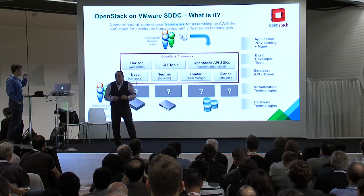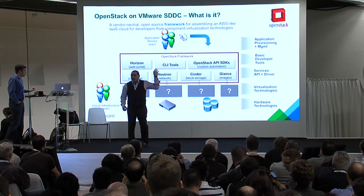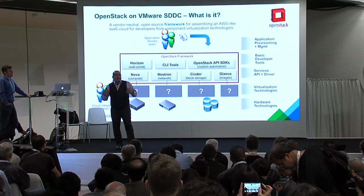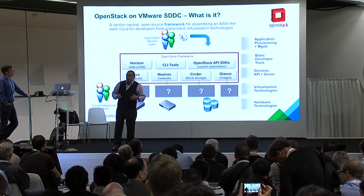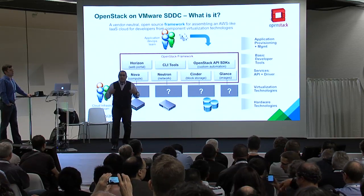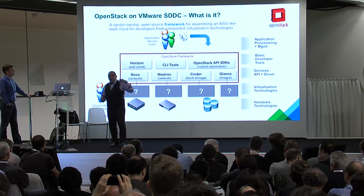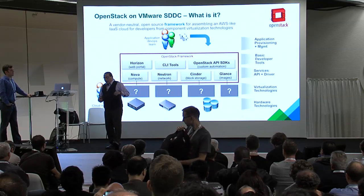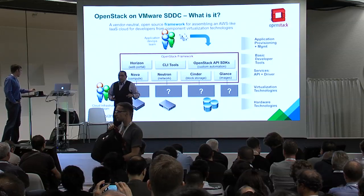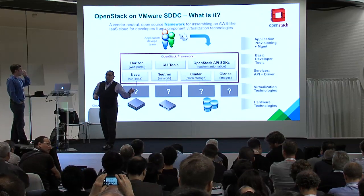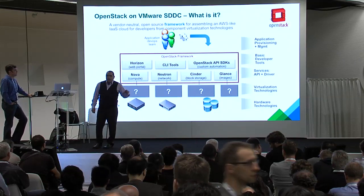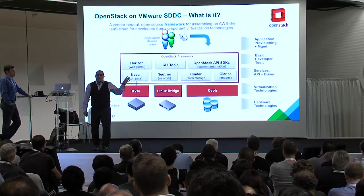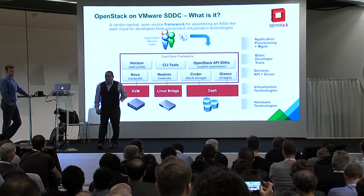The key thing about OpenStack and VMware SDDC — the Software Defined Data Center — is for us to provide a framework to assemble an AWS-type infrastructure to provide infrastructure as a service to your clients or tenants. This is for developers, and you have all the essential component variations available: Horizon, all the CLI tools for the different projects — Nova, Neutron, Cinder, Glance. The underlying infrastructure can be whatever you're using — typically KVM, Linux Bridge architecture, and NFS.